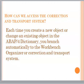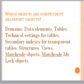How can we access the Corrections and Transport System? Each time you create a new object or change an existing object in the ABAP/4 Dictionary, you branch automatically to the Workbench Organizer or Corrections and Transport System. Which objects are independent transport objects? These include: Domains, Data Elements, Technical settings for tables, Secondary Indexes per transport table, Structures, Views, Match Code Objects, Match Code IDs, and Lock Objects.